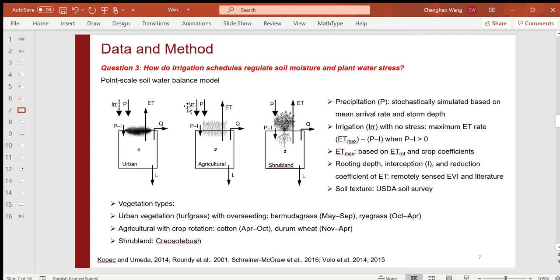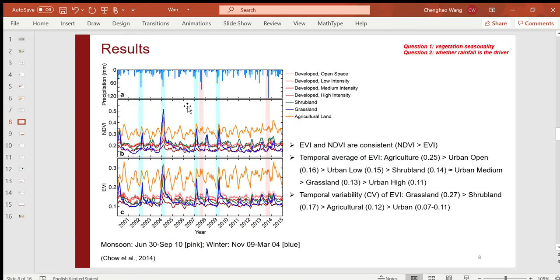For shrubland, a common species of creosote bush is used here.